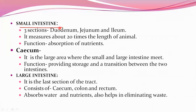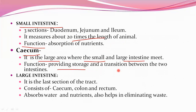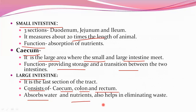The small intestine consists of three sections: duodenum, jejunum, and ileum. It measures about 20 times the length of the animal, and its function is absorption of nutrients. The cecum is a large area where the small intestine and large intestine meet, providing storage and transition between the two. The large intestine is the last section of the digestive tract, consisting of cecum, colon, and rectum. Its function is to absorb water and nutrients and eliminate waste from the body.